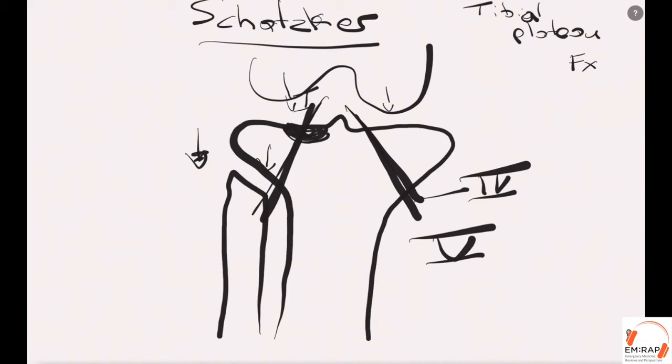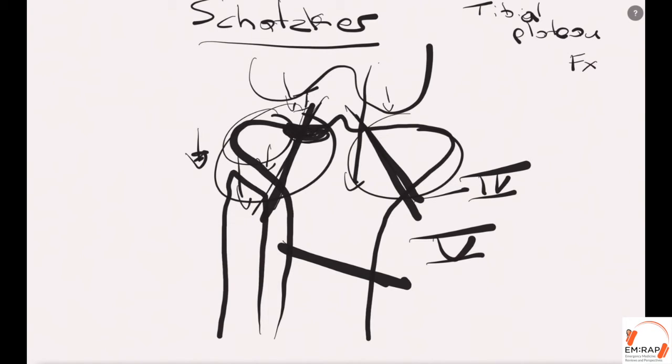And a type six is when you've got lateral, medial, and you've crushed the bone here because you've forced this femur all the way through. So again, one is just a little split, two is when this little segment here is depressed, three is when it's just depressed in here, four is medial, five is both sides, and six is the big daddy.